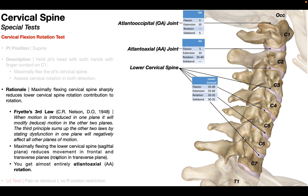By maximally flexing the lower cervical spine, we're eliminating or at least sharply reducing the contribution of rotation by the lower cervical spine, and we're getting almost entirely atlanoaxial rotation. You could certainly take a goniometer and measure this. But let's take a look at the test procedure.